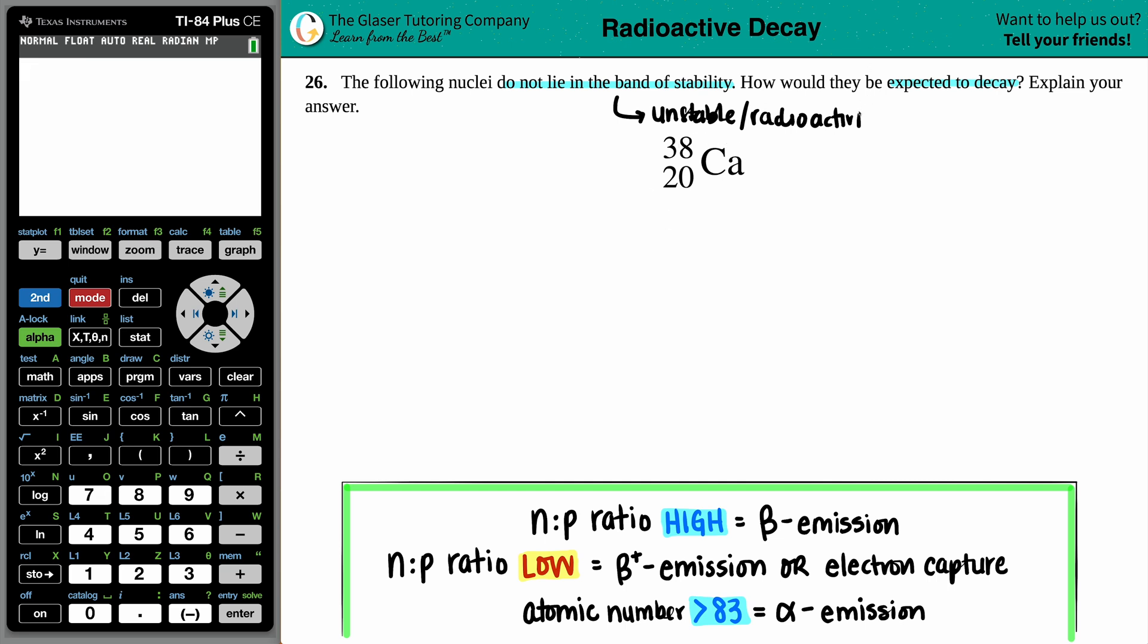Radioactivity, radioactive. Now, there's a couple of different methods, right? There's beta emission where you're letting out an electron into the atmosphere. There's positron emission where you're putting out a positron, which is the opposite of an electron, into the atmosphere. You can uptake an electron or you can emit an alpha particle, which is helium.